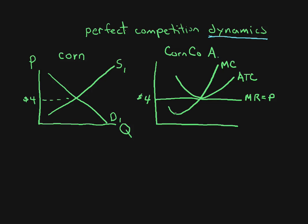Let's say the wage rate goes up, or some kind of expense in your variable inputs goes up — maybe increased spending on health care or pensions. Well, your costs are going to go up, and so too will your average total costs. You end up with new curves: MC2 and ATC2.